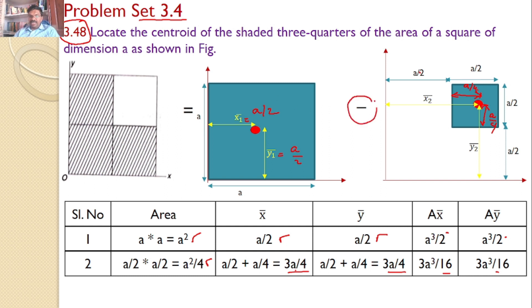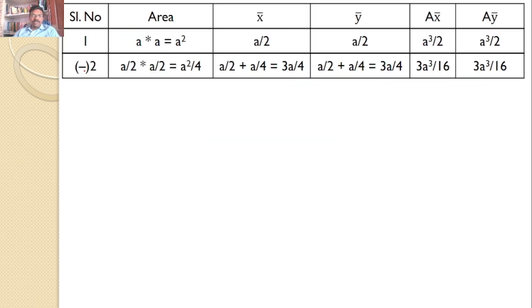But remember, you can see it is minus. The second area is minus, clearly indicating area 2 needs to be subtracted from area 1. Now sigma A means A squared minus A squared by 4, which gives 3A squared by 4. Because area 2 is to be subtracted.